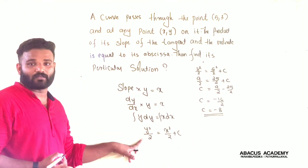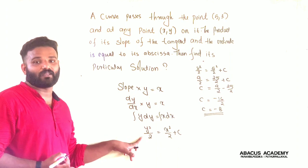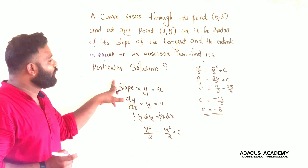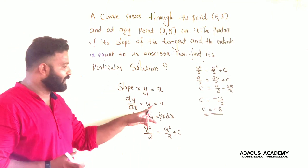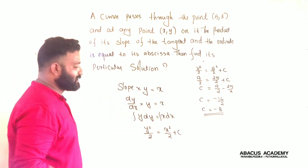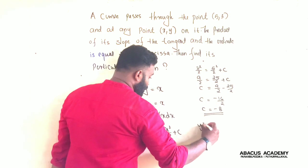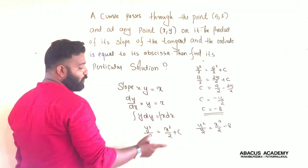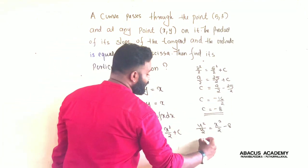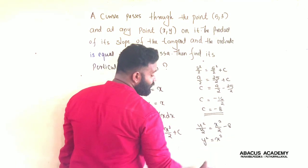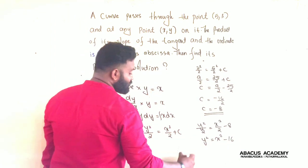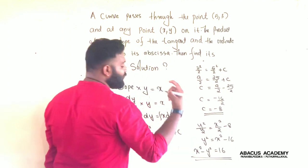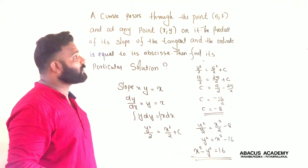That was the general solution of the curve. To find the particular solution, we replace c with minus 8. So the equation becomes y squared by 2 equals x squared by 2 minus 8. Multiplying both sides by 2, we get y squared equals x squared minus 16. Therefore, the final equation is x squared minus y squared equals 16. This is the particular solution of that curve.